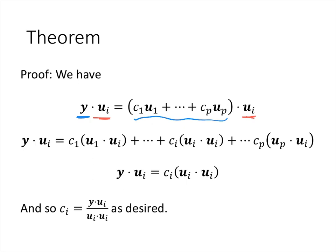Since the u's form an orthogonal set, all those dot products equal zero except ui dotted with itself. Since ci is what we're looking for, we divide both sides by ui dot ui. We know we're not dividing by zero because all basis vectors are non-zero, so ui dot ui equals the length of ui squared, which is not zero. That gives us the formula ci = (y dot ui) / (ui dot ui).